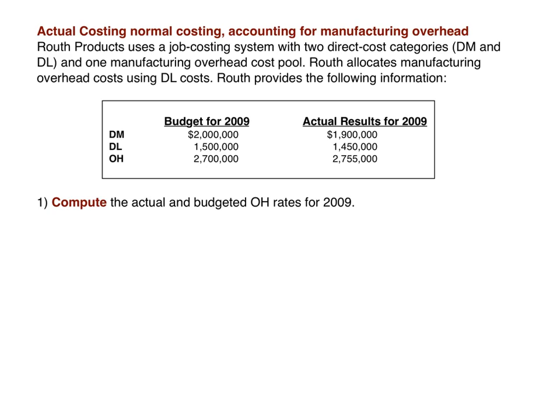Let's move to an example. Here we have Ruth Products. They use a job costing system with two direct cost categories — direct materials and direct labor — and one manufacturing overhead cost pool. Ruth allocates manufacturing overhead costs using direct labor cost as the allocation base. Ruth provides budgeted information for 2009 and actual information for 2009, and we need to compute both the actual and budgeted overhead rates.